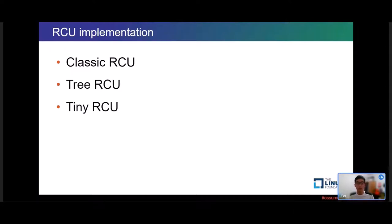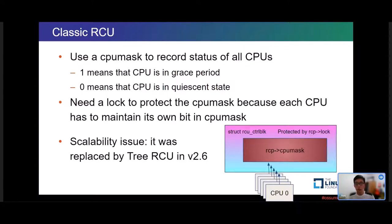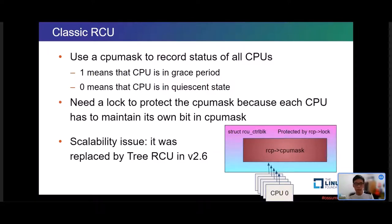There are three different RCU implementations. Classic RCU uses a global CPU mask to record the status of all CPUs — a bit set represents that the CPU is in a quiescent state. Since the CPU mask is a global variable accessed by all CPUs, we need a lock to protect it. However, it suffers from poor scalability because all CPUs have to acquire the lock before changing their own status. Classic RCU was already replaced by Tree RCU in version 2.6.